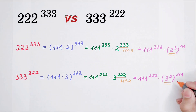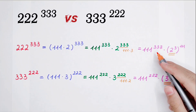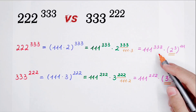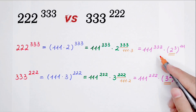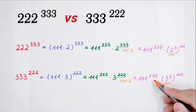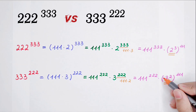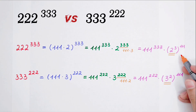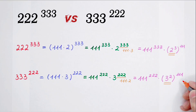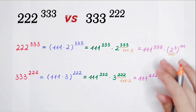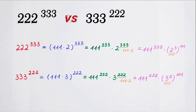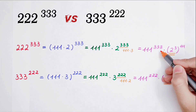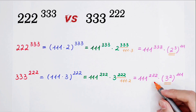Now, comparing: here we have 111 to the power of 333 times 8 to the power of 111, and there we have 111 to the power of 222 times 9 to the power of 111. We can see that 111 to the power of 333 is larger than 111 to the power of 222, but 8 to the power of 111 is smaller than 9 to the power of 111. So we cannot compare them directly yet — we need to do some more changes. We should make the exponent equal to 222.